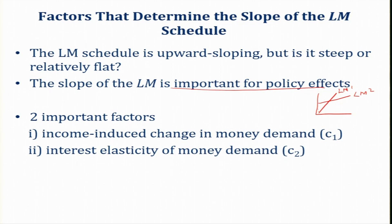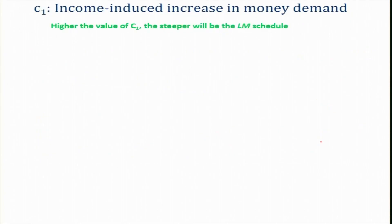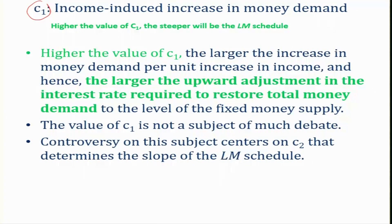There are two factors that determine the slope of the LM schedule: one is the income-induced change in money demand, c1, and the second is the interest elasticity of money demand, c2. A higher value of c1 means larger increase in money demand per unit increase in income, and hence a larger upward adjustment in the interest rate is required to restore total money demand to the level of the fixed money supply.